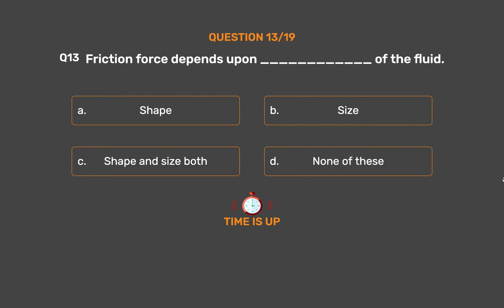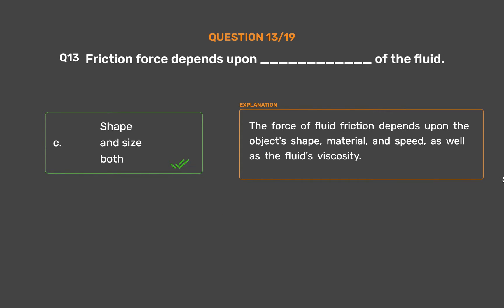The correct answer is Option C: Shape and size both. The force of fluid friction depends upon the object's shape, material, and speed, as well as the fluid's viscosity.